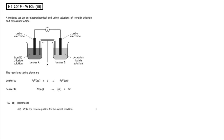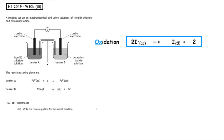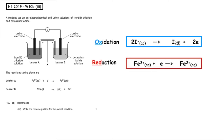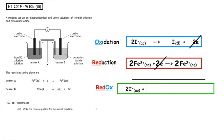Past paper question: National 5 2019, written 10b part 3. A student set up an electrochemical cell using solutions of iron(III) chloride and potassium iodide. Write the redox equation for the overall reaction. We identify the oxidation (electrons on product side) and reduction (electrons on reactant side). Equation one has two electrons and equation two has one, so multiply the reduction by two: 2Fe³⁺(aq) + 2e⁻ → 2Fe²⁺(aq). Cancelling electrons gives the overall redox: 2I⁻(aq) + 2Fe³⁺(aq) → I₂(l) + 2Fe²⁺(aq).